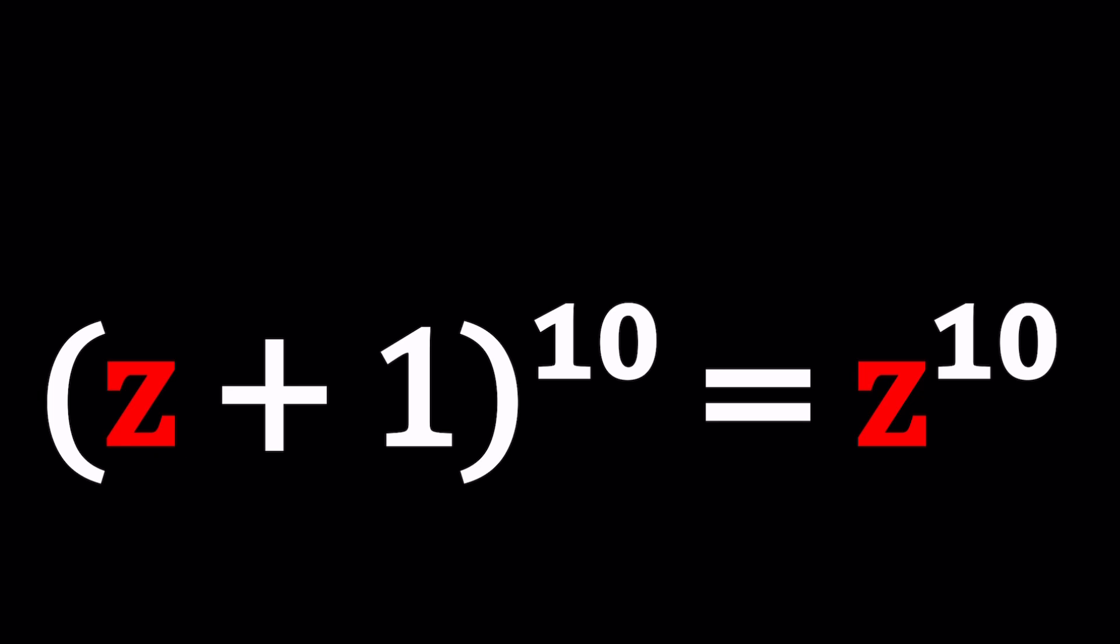So we have z plus 1 to the 10th power equals z to the 10th power and we're going to be solving for z values. We can definitely talk about at least two methods. There's probably more ways to do it. And let's get started.